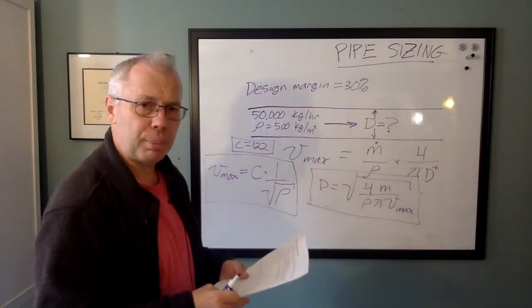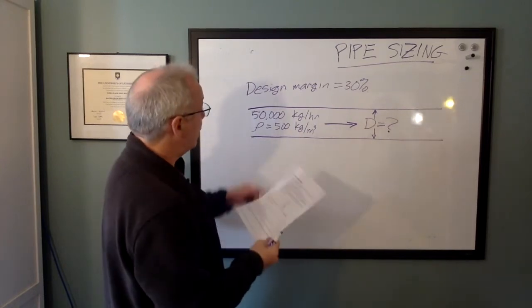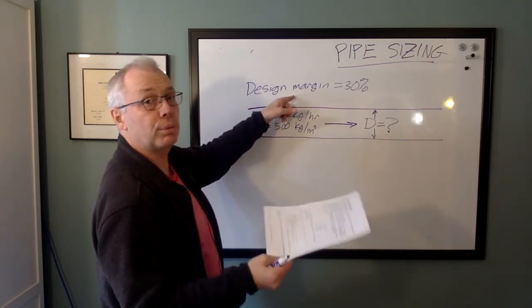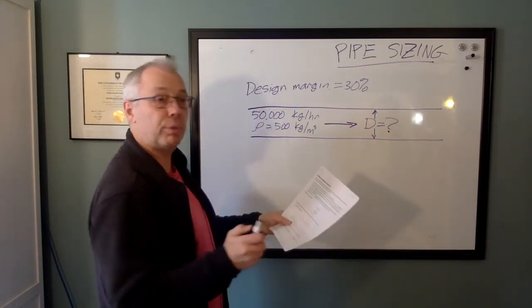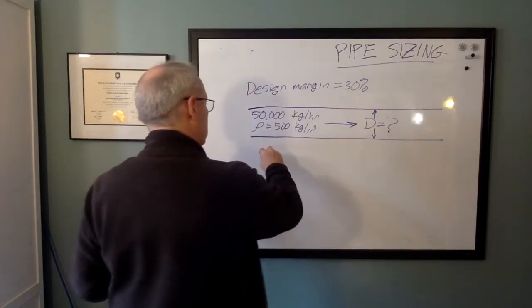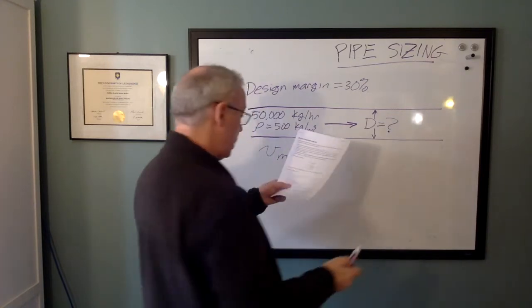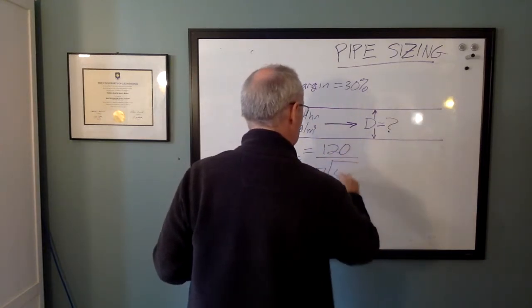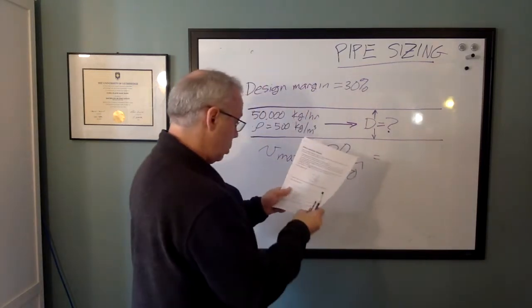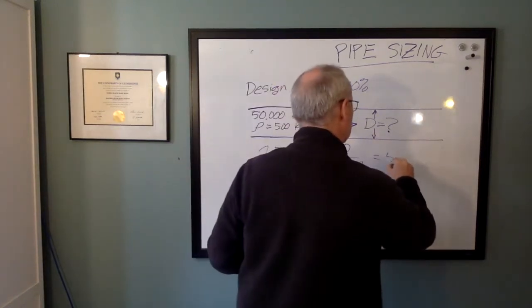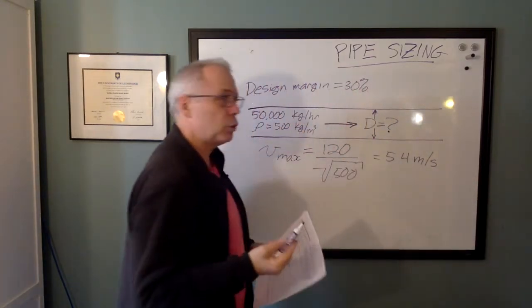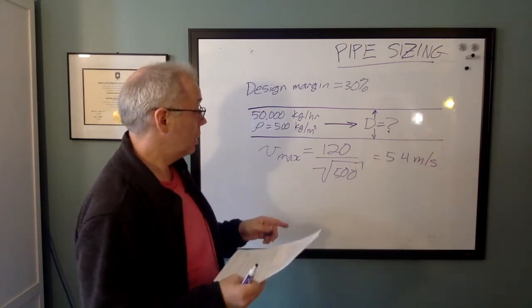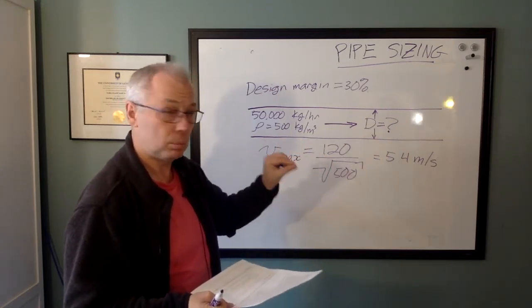So let's work through an example. For our example, we have 50,000 kilograms per hour, density of 500 kilograms per cube, and a design margin on flow rate of 30%. And first, we will find the maximum velocity. So Vmax, and we'll use this magic C factor. We'll call it 120. That's the number I typically use. 120 divided by the square root of 500. And that number is equal to 5.4 meters per second. So this says we should not allow the fluid to go faster than 5.4 meters per second. So we will pick that as our design velocity. That's our criteria. 5.4 meters per second.